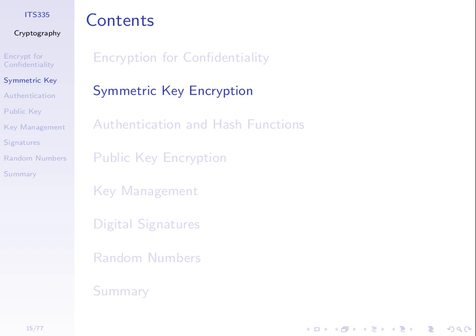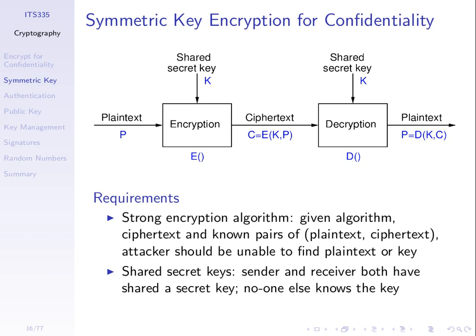Now let's move into real ciphers and specifically symmetric key encryption. Symmetric key encryption means the sender and receiver use the same key — there's symmetry between the keys. We take some plaintext, encrypt using a shared secret key K, send the ciphertext to the recipient, and they decrypt using the same key K. So K used for encryption and K used for decryption are the same value. This is commonly used for data confidentiality.